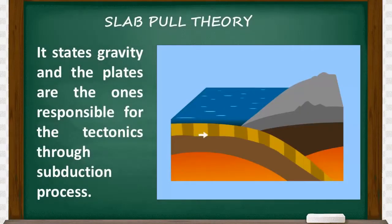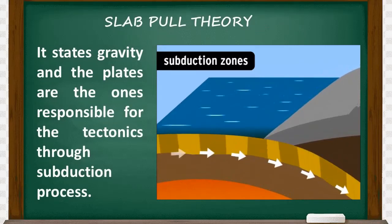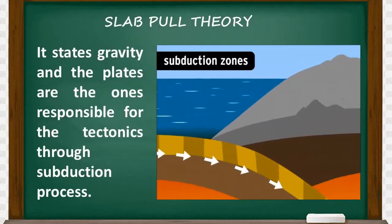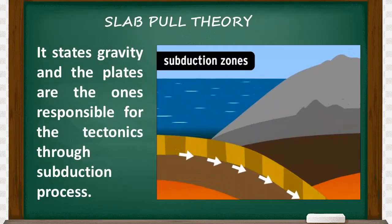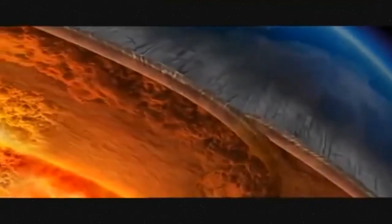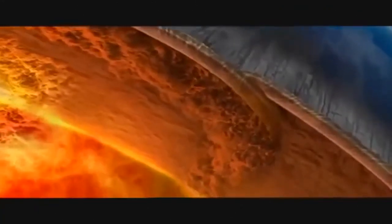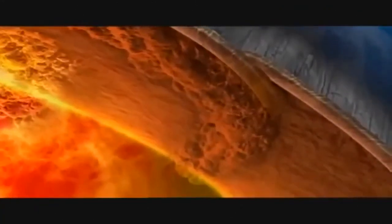This theory states that gravity and the plates themselves are the ones responsible for plate tectonics through subduction process. We are aware that subduction zones exist at the outer edges of plates. In these zones, rocks are older, hence they are cooler and denser compared to those located at the inner layers.